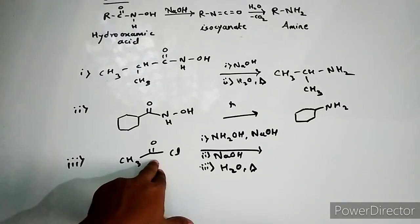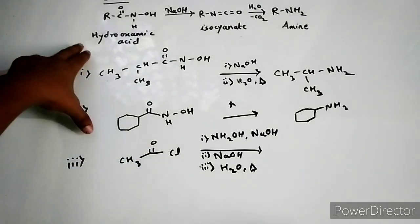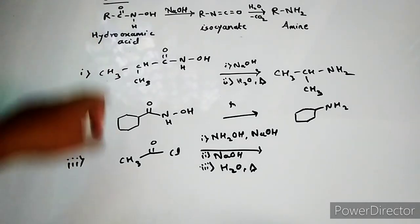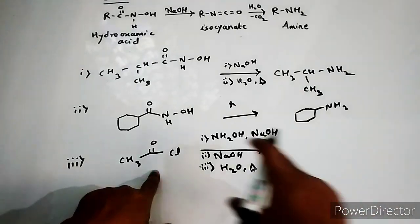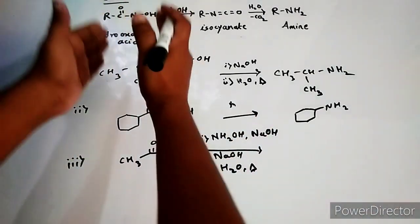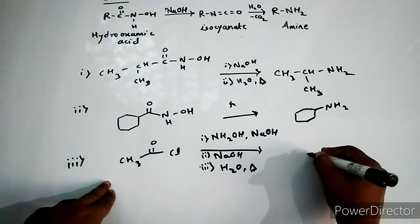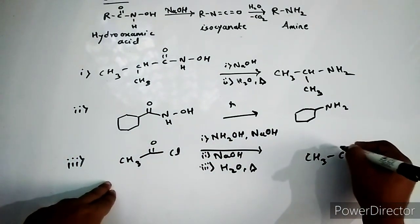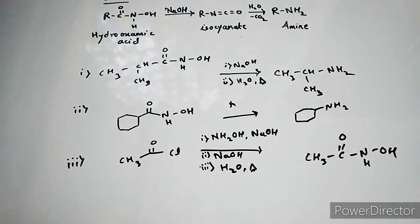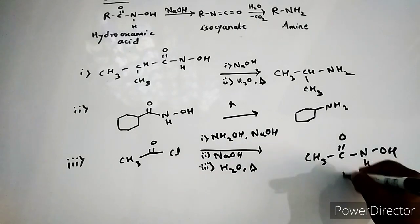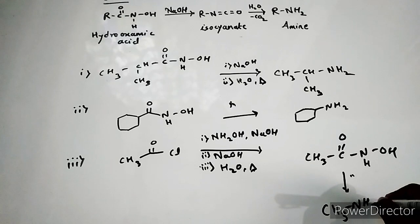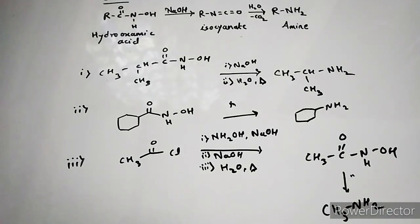In the next one they are starting with acyl chloride. Up to this we saw the mechanism and reaction starting with hydroxamic acid. In this condition you are starting with acyl chloride and they have given you hydroxylamine with NaOH. That means first you have to form the hydroxamic acid which will be your first step product, and it would look like this one.